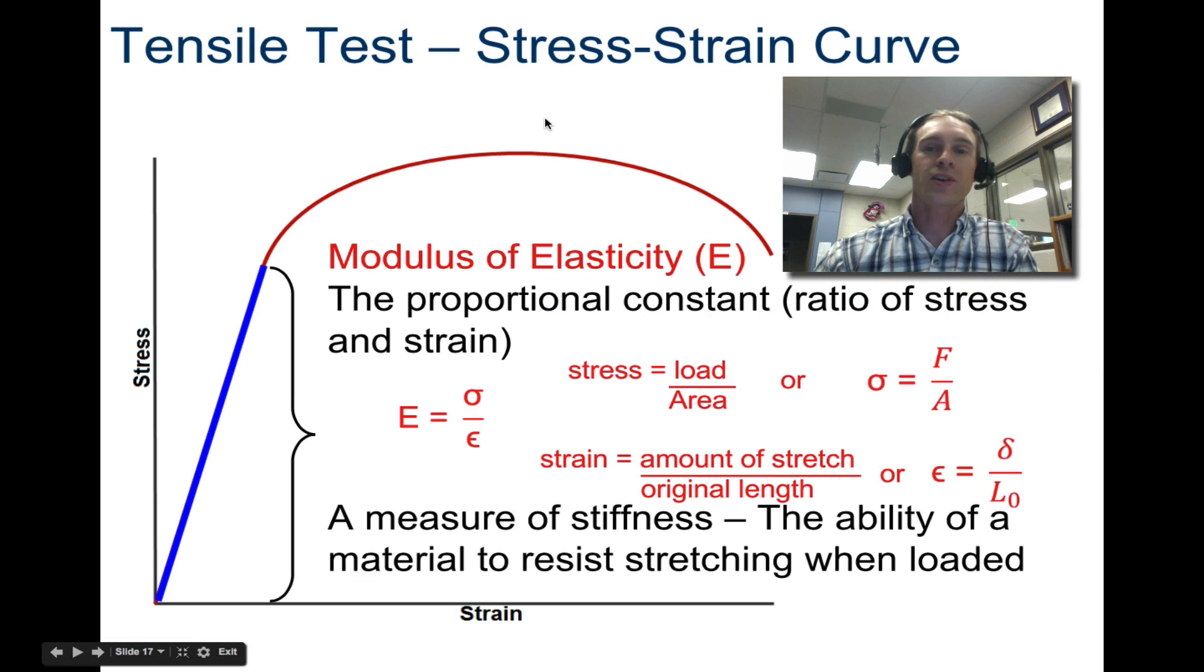Tensile test is a stress-strain curve. Stress, that equation that we just looked at before, or this one right here, divided by strain, which we'll take a look at in just a second, gives you modulus of elasticity, that E. So it is a proportional constant. It's a ratio of stress to strain. Stress is load or force divided by area. Again, we have that here.